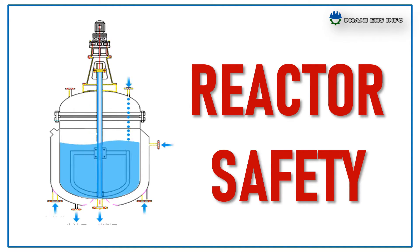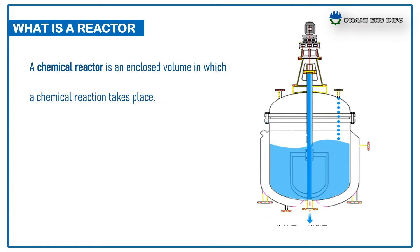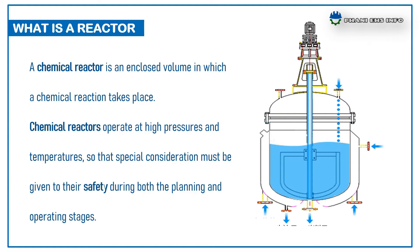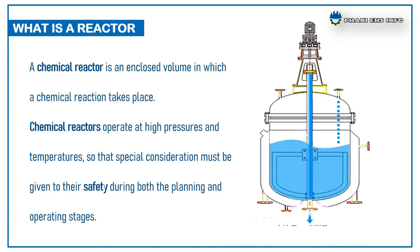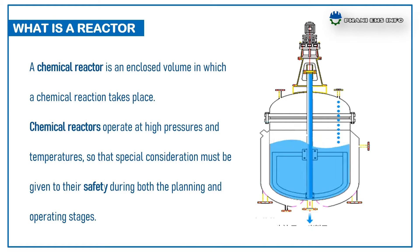Hello everyone, this is Funni HS Info. Today I'm going to talk about reactor safety. What is a chemical reactor? It is an equipment used to carry on a chemical reaction. A chemical reactor is an enclosed volume in which chemical reactions take place.